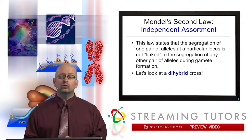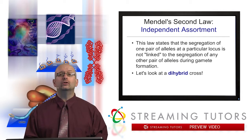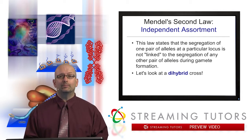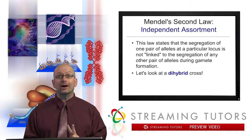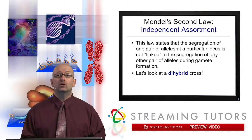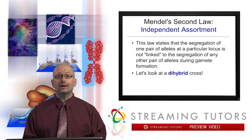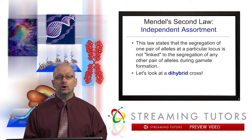So in order to do this, we have to do what's called a dihybrid cross. Dihybrid simply means that we're going to keep track of two traits at the same time as we go ahead and do our crosses.